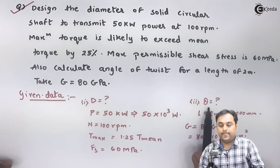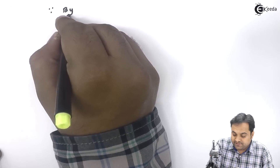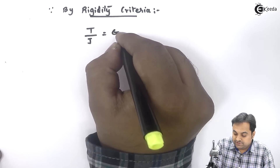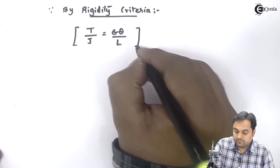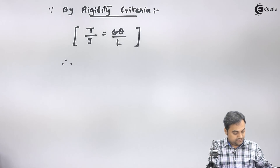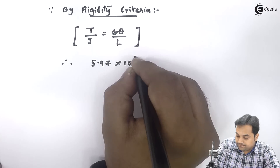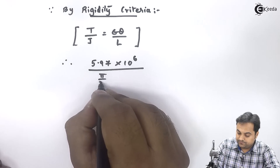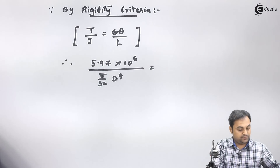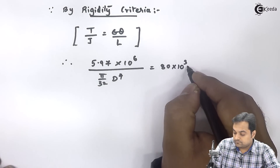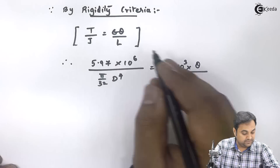Now, since theta — the angle of twist — is also asked, I will use the rigidity criteria. By rigidity criteria, the formula is T divided by J equals G times theta divided by L. T is 5.97 into 10 raised to 6, J is π/32 times D raised to 4, and G — modulus of rigidity — is 80 into 10 raised to 3 Newton per mm square.